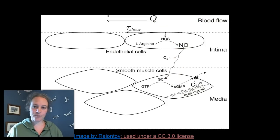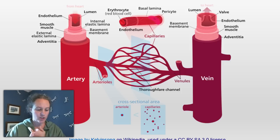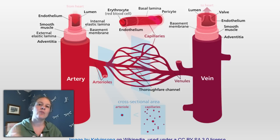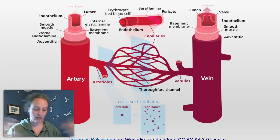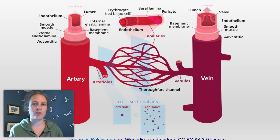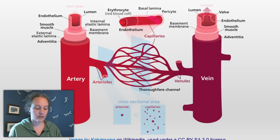What can stimulate nitric oxide? As mentioned, shear stress — but there are also other things. For example, cytokines in the bloodstream, or acetylcholine, or various other signaling molecules can also trigger nitric oxide release.